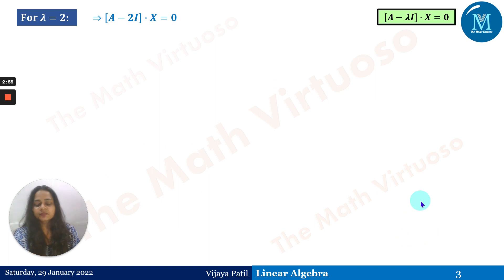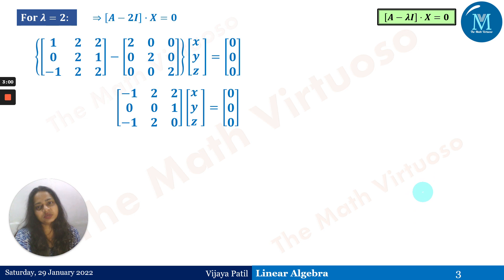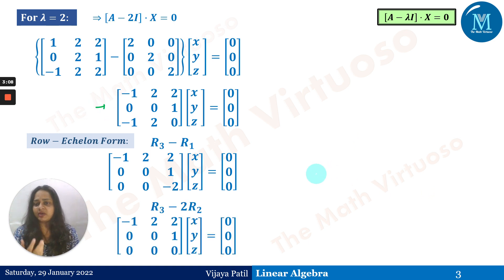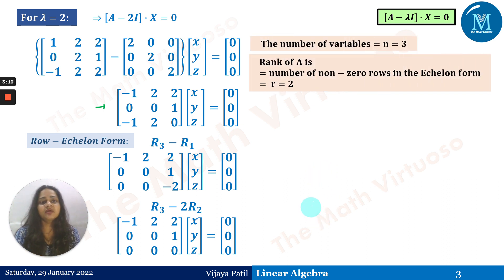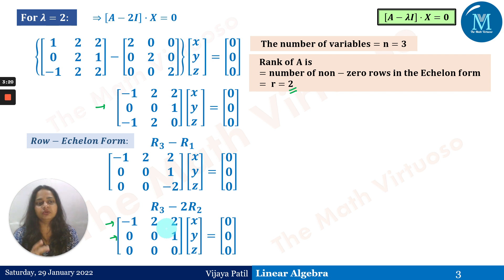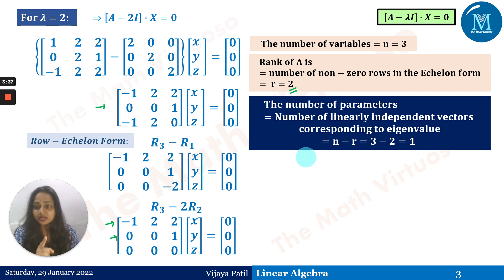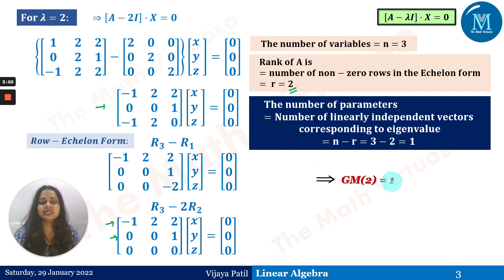For λ = 2, we solve (A − 2I)x = 0. After the matrix subtraction, we perform row reduction to row echelon form. The rank of this matrix is 2, because there are 2 non-zero rows in the echelon form. The number of linearly independent eigenvectors is n − r = 3 − 2 = 1. Therefore, the geometric multiplicity of λ = 2 is 1.